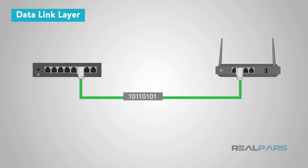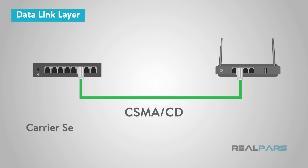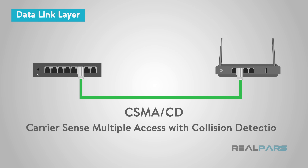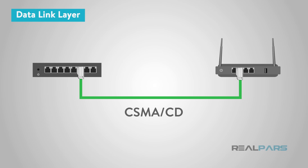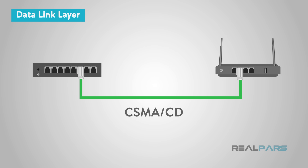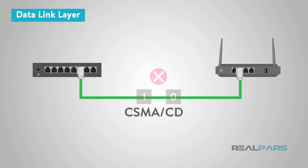Ethernet transmits data packets in this data link layer by using an algorithm called CSMA/CD, or Carrier Sense Multiple Access with Collision Detection. CSMA/CD is used as a standard for Ethernet to reduce data collisions and increase successful data transmission. The algorithm first checks to see if there is traffic on the network. If it does not find any, it will send out the first bit of information to see if a collision will occur. If this first bit is successful, it will send out the other bits while still testing for collisions. If a collision occurs, the algorithm calculates a waiting time and then starts the process all over again until the full transmission is complete.